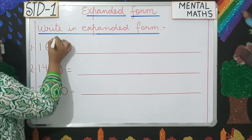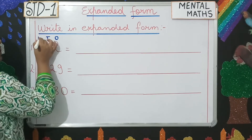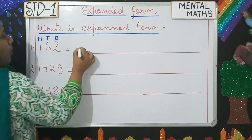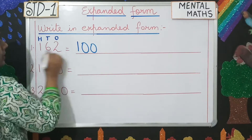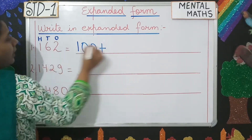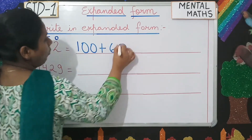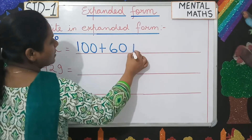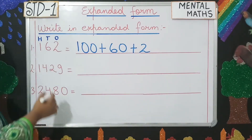This is the 1s place, this is the 10s place, and this is the 100s place. So we'll add two 0s to the 100s place, then put a plus sign, then to the 10s place we'll add one 0, and to the 1s place we'll add no 0s. Clear?